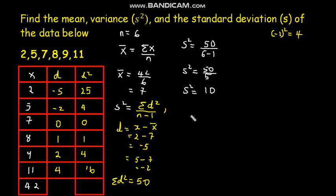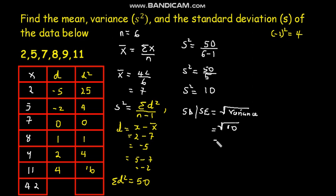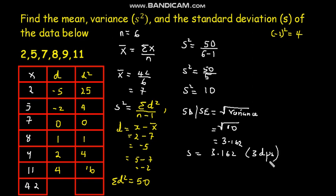The examiner wants us to calculate the sample standard deviation. By formula, the sample standard deviation s is equal to the square root of the variance. Therefore our sample standard deviation is the square root of 10, which is 3.162 to 3 decimal points.